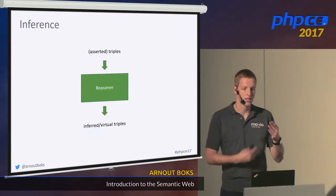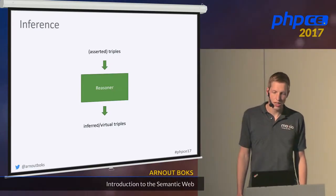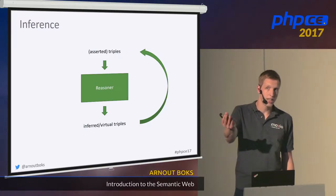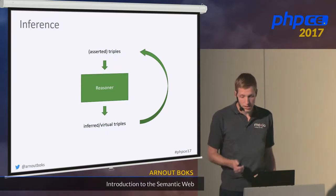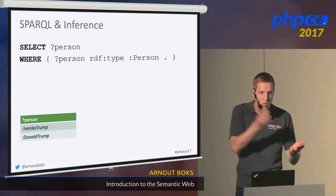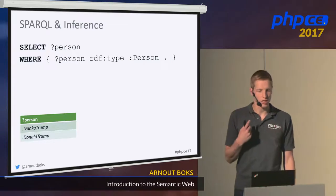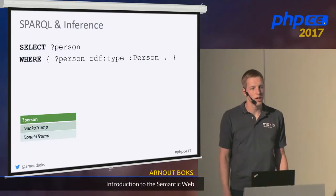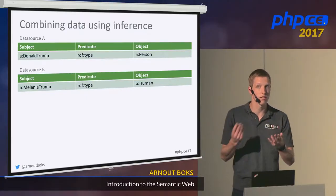This process of deriving new data from old data and RDFS schema is called inference. The original triples we put in are called asserted triples, and the new triples we inferred are called inferred or virtual triples. The inference is done by something called a reasoner, and it's a recursive process: we can put the inferred triples back into the reasoner and infer even more information, and more, as long as new triples can be derived. Usually SPARQL endpoints also understand RDFS — so if we execute a SPARQL query asking for all things that are a Person, we'd get back both Ivanka Trump and Donald Trump, because the reasoner concludes both must be a Person.